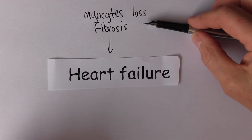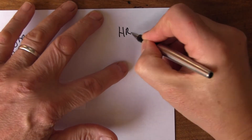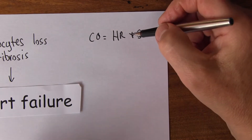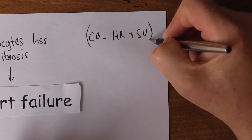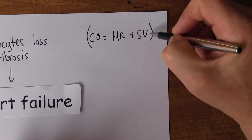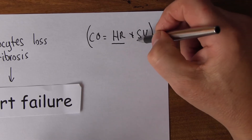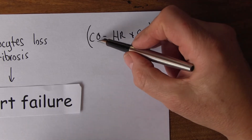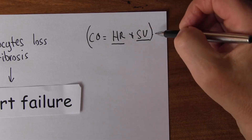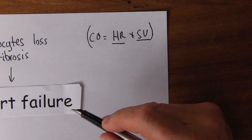Remember, cardiac output is heart rate multiplied by stroke volume. The cardiac output is the volume of blood pumped per minute. The heart rate is the number of times it contracts per minute. The stroke volume is the volume per ventricular contraction. So the ventricle contracting 70 times a minute with 70 mls per contraction gives us 4,900 mls — about five litres — which is a normal cardiac output in a healthy adult at rest.